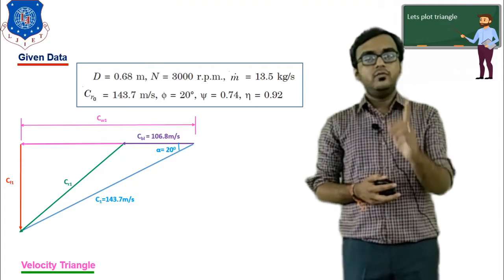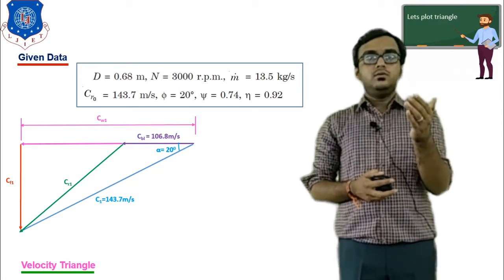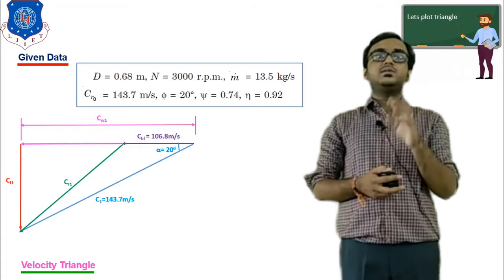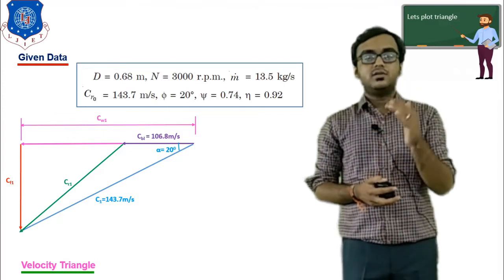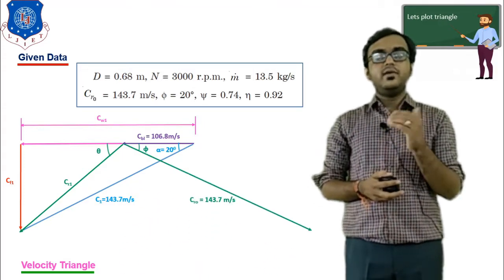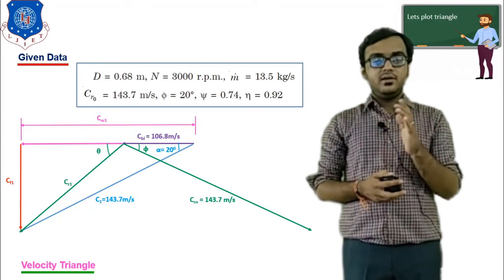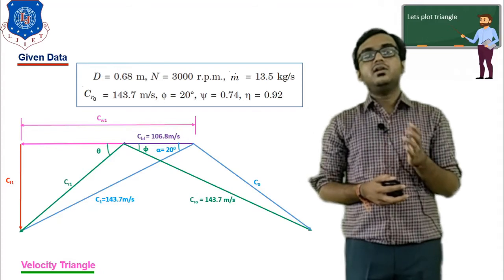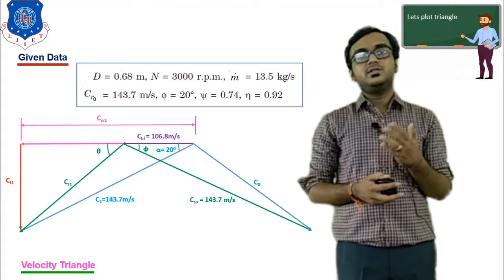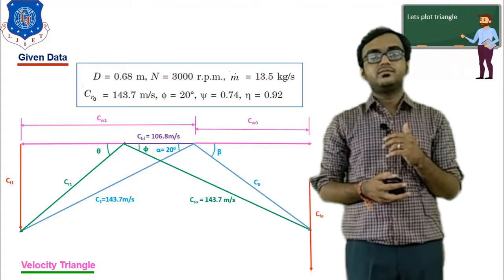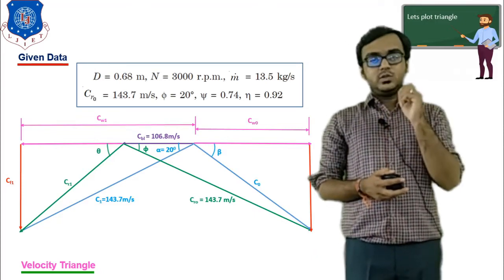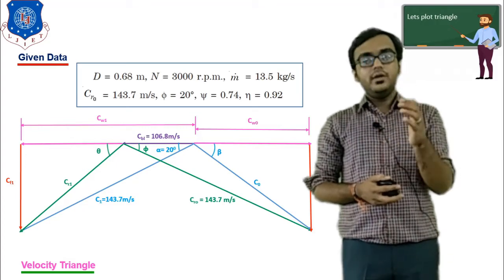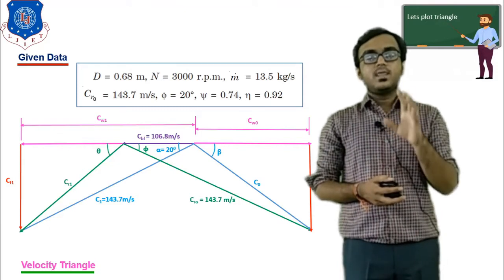To plot the outlet triangle, we have vector Cro. Since Cro = C1 and Cr1 = Co, we plot another vector of magnitude 143.7 m/s. The resultant vector is Co. The vertical component of Co is the flow component, and the horizontal component is the whirl component Cwo. This completes the plotting of the velocity triangle, which is crucial for analyzing turbine performance.